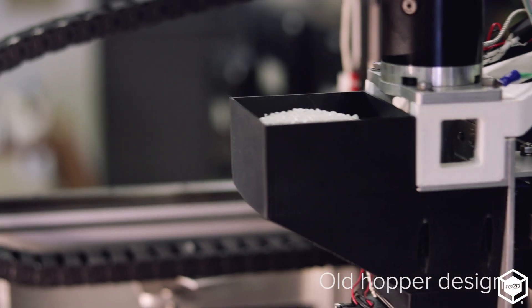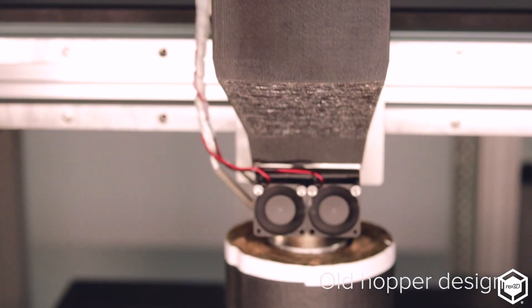From the original hopper, we realized the screw was printing way faster than we thought it was. It was pushing a lot more material than we expected, so what we realized is our hopper needed to have more space.